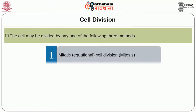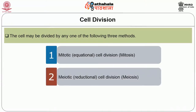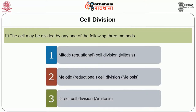Cell division: a cell may be divided by any one of the following three methods. One is mitotic, also called as equational cell division or mitosis. The second is meiotic or reductional cell division called as meiosis. The third is direct cell division called as amitosis.